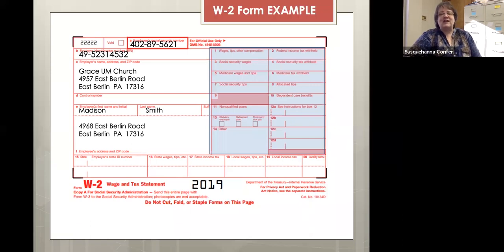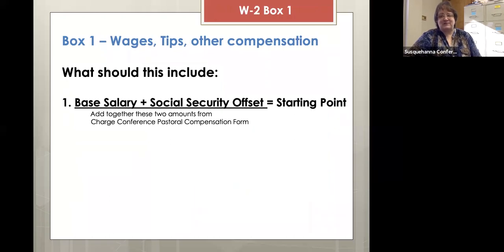Looking at the shaded area of the W-2, the very first box is box one, where we list the federal wages, tips, and other compensation. How do we find that number? It starts with first the base salary and Social Security offset numbers that we lift from the charge conference pastoral compensation form. This is just our starting point. When we add those two numbers together, we work from there to determine the final figure.